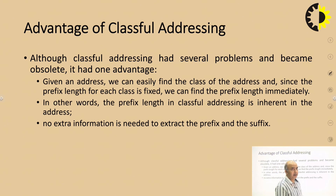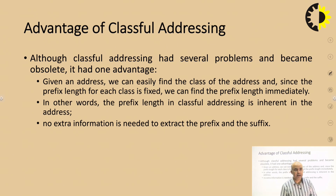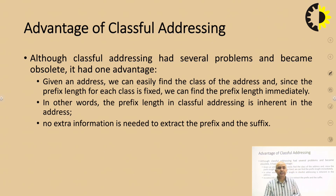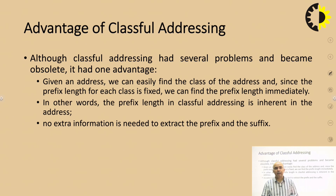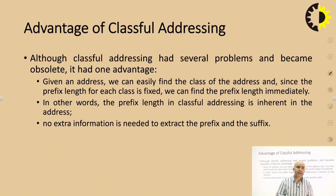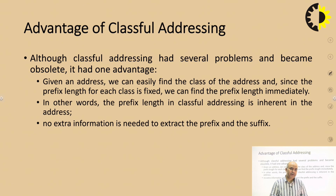What are the advantages of classful addresses? For any given address, we can easily find the class. If the first number is 91, it is class A. If the first number is 150, it is class B. Since the prefix length of each class is fixed, we can identify the class of the IP address. In other words, the prefix length in a classful address is inherent in the address itself. Once we identify the prefix, we can identify the suffix and determine how many IP addresses can be allocated to different devices.